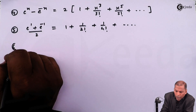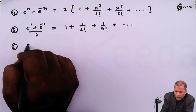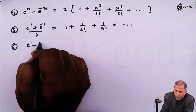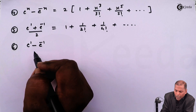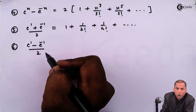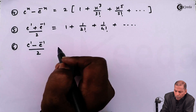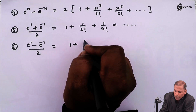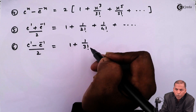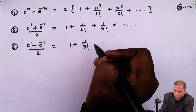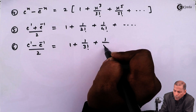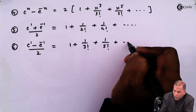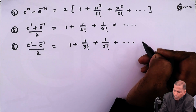Result number 6 is e raise 1 minus e raise minus 1, upon 2. That is equal to 1 plus 1 upon 3 factorial plus 1 upon 5 factorial, and going on.